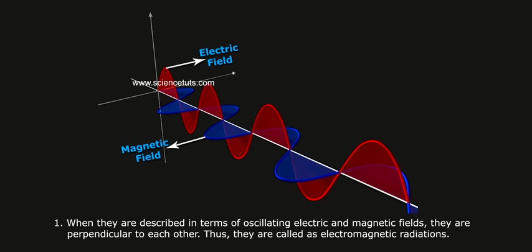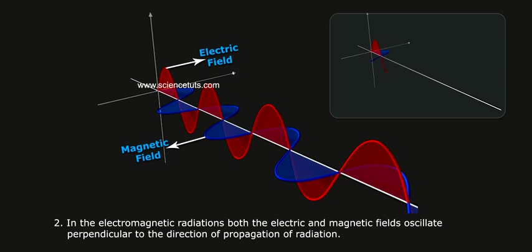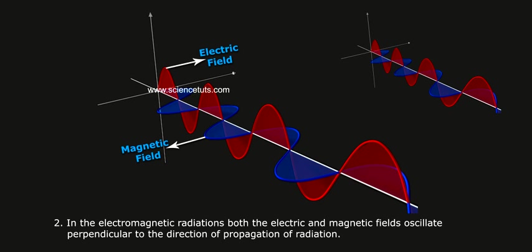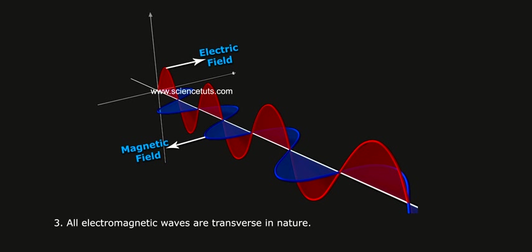In the electromagnetic radiations, both the electric and magnetic fields oscillate perpendicular to the direction of propagation of radiation. All electromagnetic waves are transverse in nature.